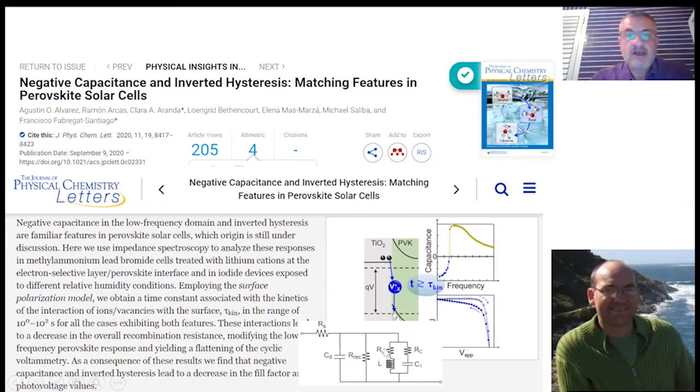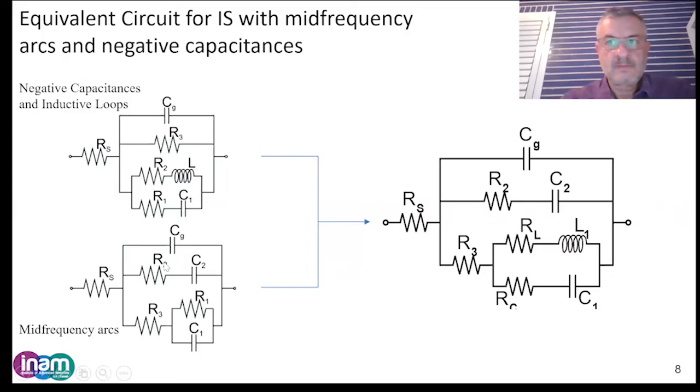The impedance model associated to the surface polarization model has been recently used by Fran Fabregat-Santiago and his co-workers in a paper published in the Journal of Physical Chemistry Letters to describe the inverted hysteresis and the connection to the negative capacitance, also finding the kinetic time constant of the model related to surface polarization governed by ionic processes.